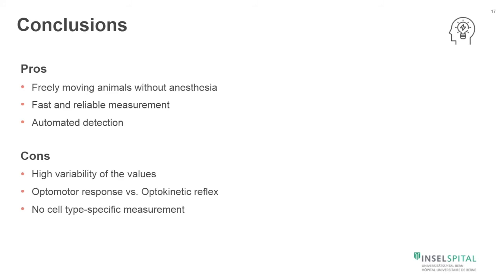On the other hand, because of the automated detection, values can have quite high variability, requiring a certain number of animals. And you cannot do any cell-type-specific measurement in the retina, which you could do by using the electroretinogram.